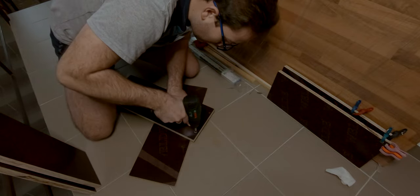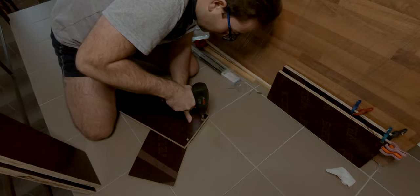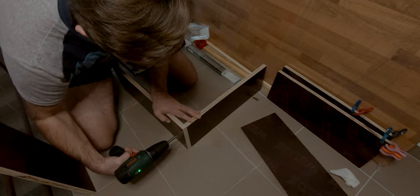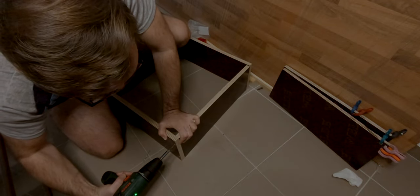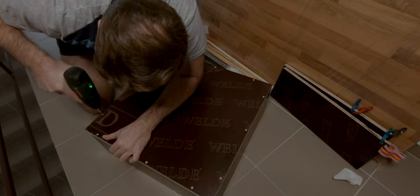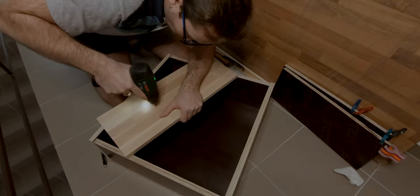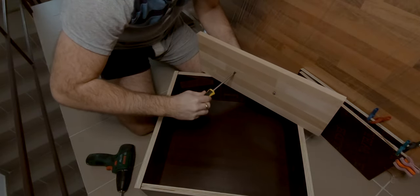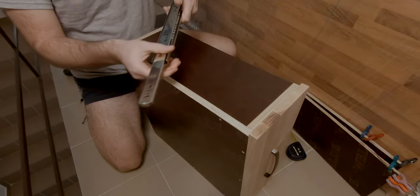After the glue had dried I could start assembling the drawers. First I fixed all side panels then I attached the bottom piece. The front panel was fixed after I attached the handle and the last step was to attach the metal rails.